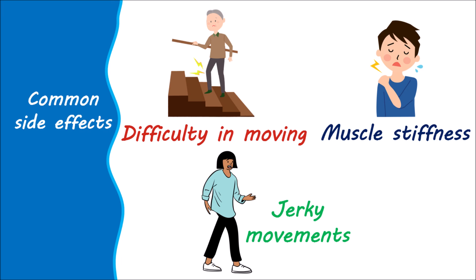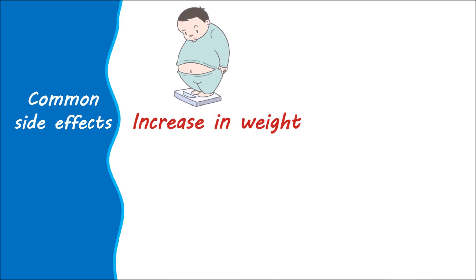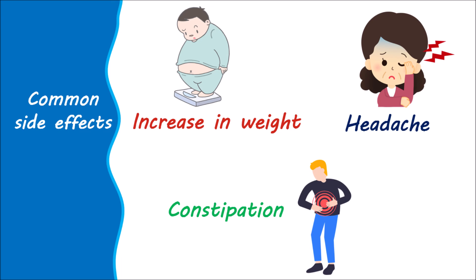When dopamine actions are blocked at locations like the striatum, you can observe disturbances in body movements commonly termed dyskinesia. Another important side effect is increased body weight, again due to enhanced appetite with the use of risperidone. Other side effects like headaches and constipation can also be observed. So that's all about the pharmacology of risperidone.